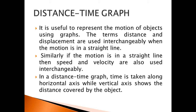In a distance-time graph, time is taken along the horizontal axis while the vertical axis shows the distance covered by the object. In other words, time is taken along the x-axis while the distance covered by the object is taken along the y-axis.